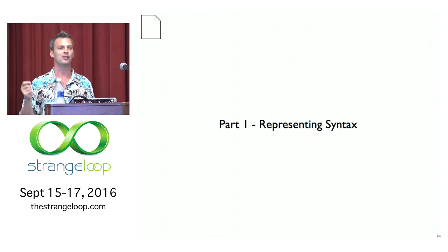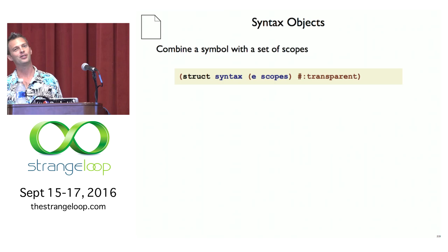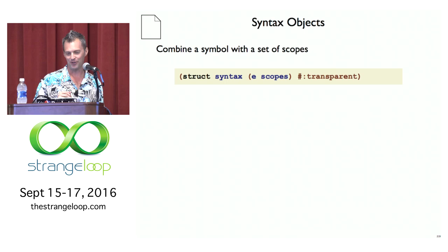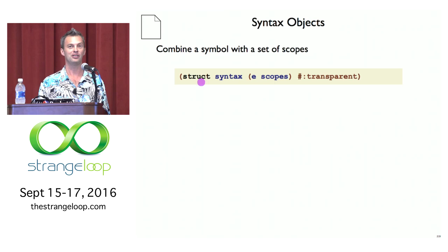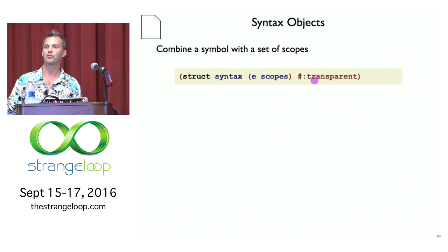The file icon on the top left will fill in as we generate all the code, giving you a sense of progress and scale as we go. We start out with just one line, so it won't grow very fast at first, but it will accelerate and still be understandable. We're starting off with the representation of syntax objects — we need to pair a symbol with a set of scopes. We do that in Racket notation using the struct declaration, which introduces a new record type: syntax.